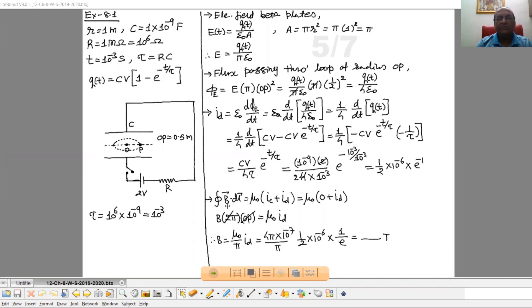Now Ampere Maxwell law: integration B dot DL equals mu 0 into IC plus ID. But between two plates of the capacitor conduction current is 0. So here IC equal to 0 and ID as it is. So now B integration DL is 2 pi into radius. Radius that is OP. OP is 1 by 2. So 1 by 2 and this 2 is cancelled. And on right hand side mu 0 ID.